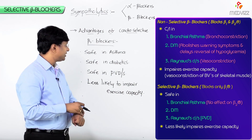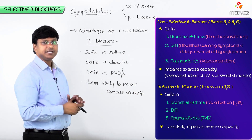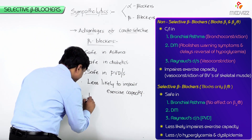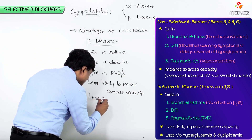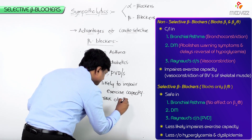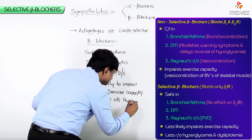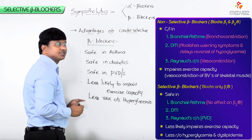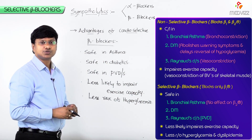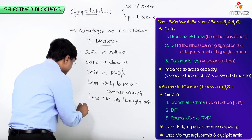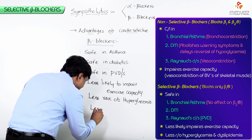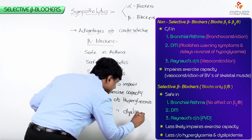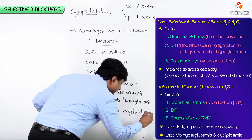These beta-1 blockers also have a very low risk of hyperglycemia. Additionally, they have less risk of dyslipidemia. These are the advantages of these cardioselective drugs.